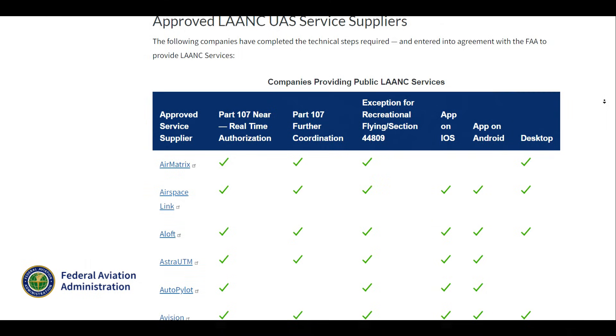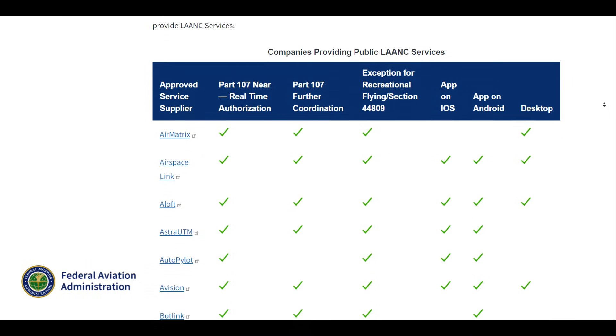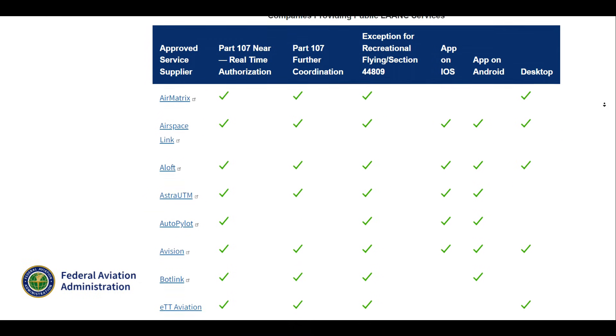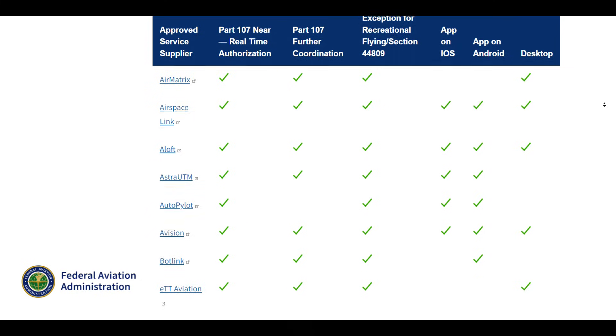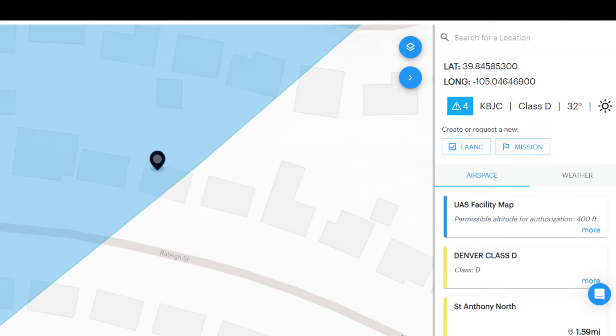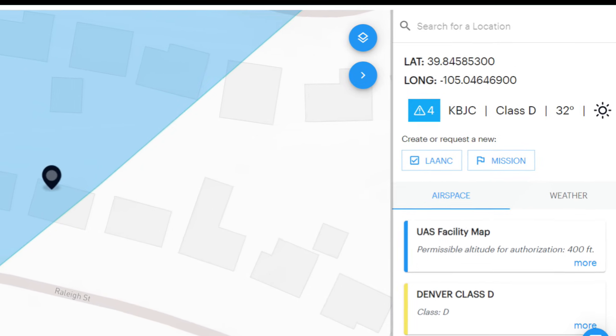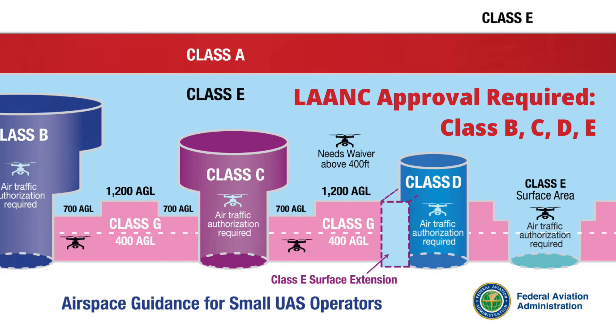Next, you need to know if your neighborhood is in controlled or uncontrolled airspace. The best way to find this out is to use one of the apps on your smartphone, such as Loft's AirControl or others, to find out if you need LAANC approval. If your neighborhood is in Class B, C, D, or E airspace, you do need LAANC approval. If it's in Class G airspace, you don't.